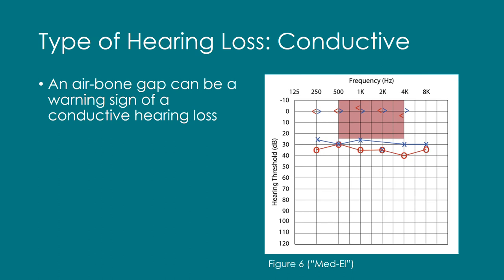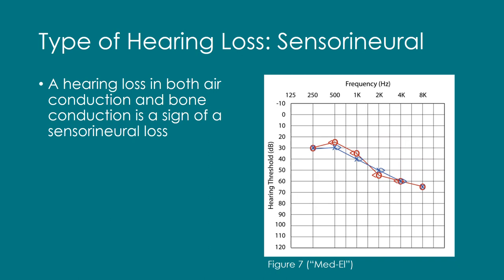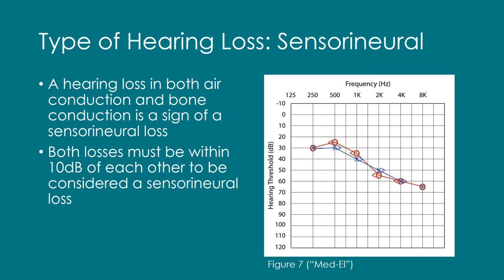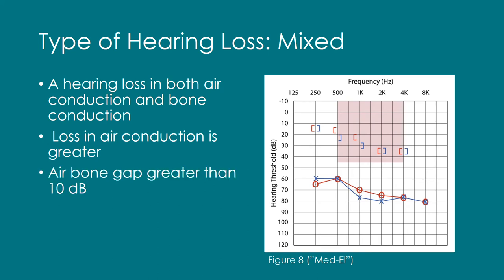You can determine the type of hearing loss from an audiogram. An air-bone gap is a tell-tale sign of a conductive hearing loss. For a conductive loss, there is a hearing loss for air conduction but normal hearing for bone conduction, as pictured in Figure 6. A sensorineural hearing loss is characterized by a hearing loss in both air conduction and bone conduction, and the losses have to be within 10 dB of each other, as displayed in Figure 7. A mixed hearing loss is characterized by a loss in both air conduction and bone conduction, with the air conduction loss being greater than the bone conduction, and an air-bone gap is present, as shown in Figure 8.